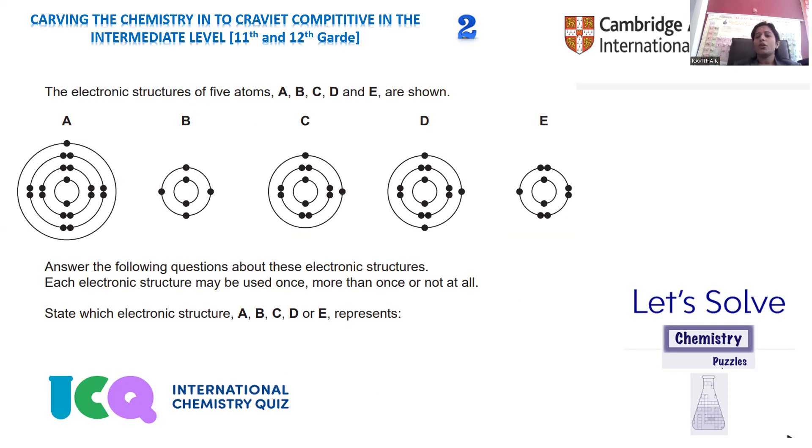Aluminum's electronic configuration is 1s2, 2s2, 2p6, 3s2, 3p1 as the outer shell configuration.